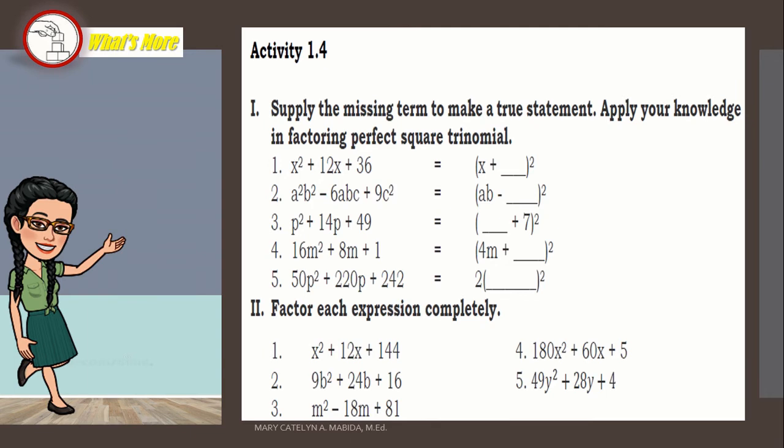Set number 1, supply the missing term to make a true statement. Apply your knowledge in factoring perfect square trinomial. Number 1, x squared plus 12x plus 36, you provide the second term. Number 2, a squared b squared minus 6abc plus 9c squared, again supply the second term. Number 3, p squared plus 14p plus 49 is equal to, supply the first term. Number 4, 16m squared plus 8m plus 1, supply the second term. And number 5, 50p squared plus 222p plus 242, supply your binomial. Again, do not forget your common monomial factors.